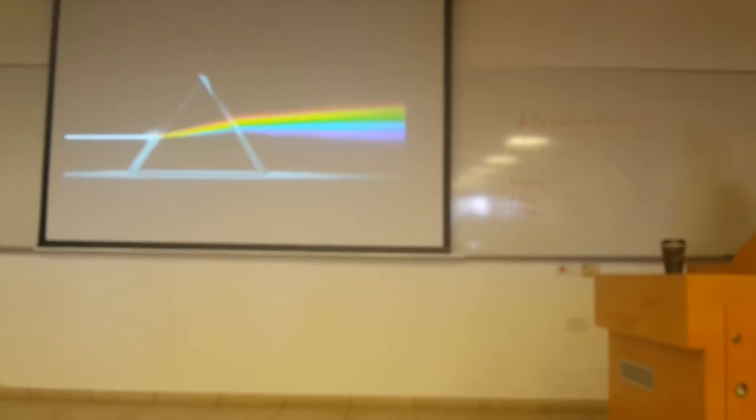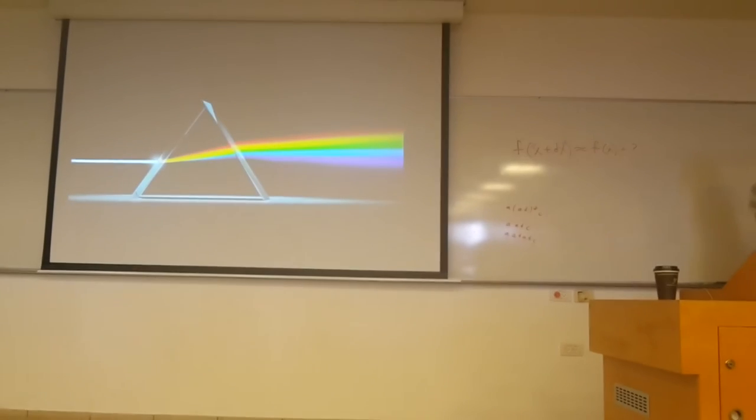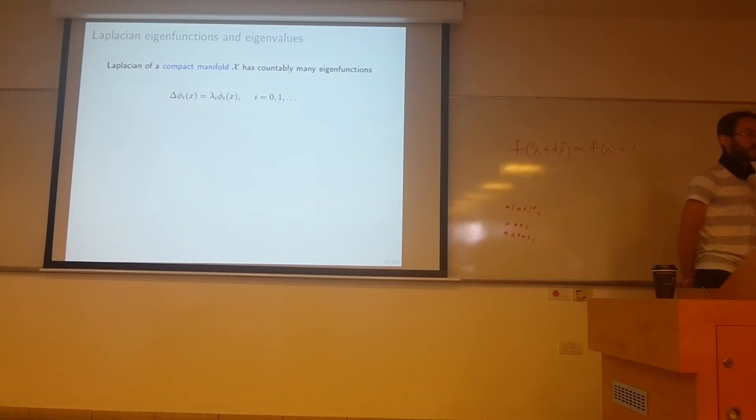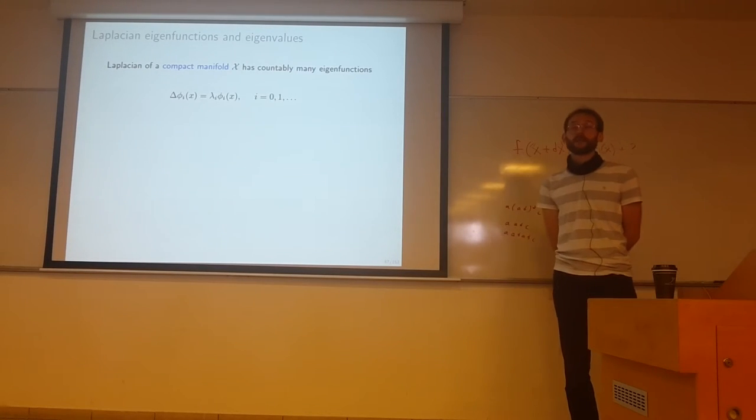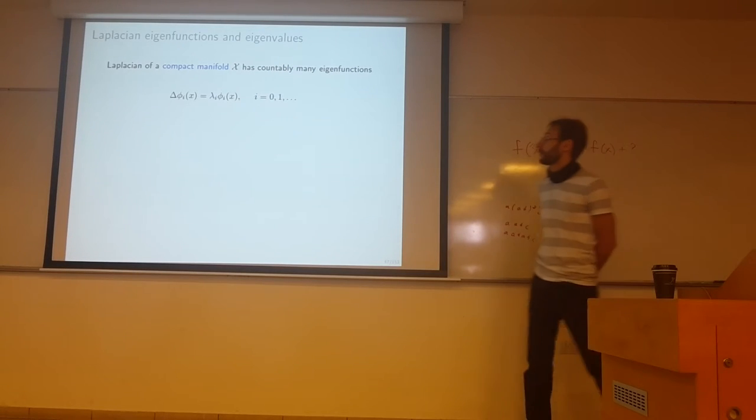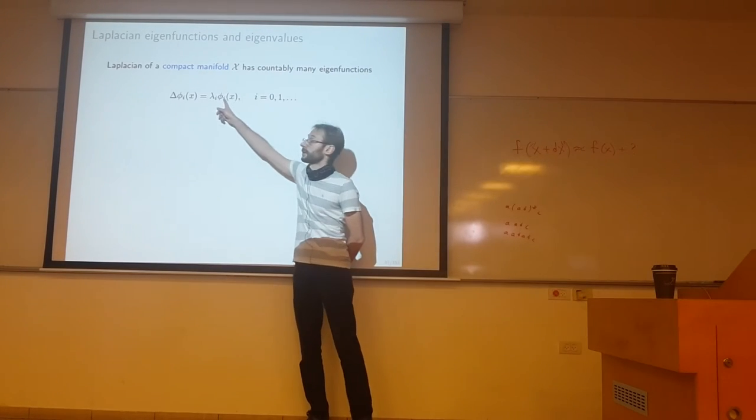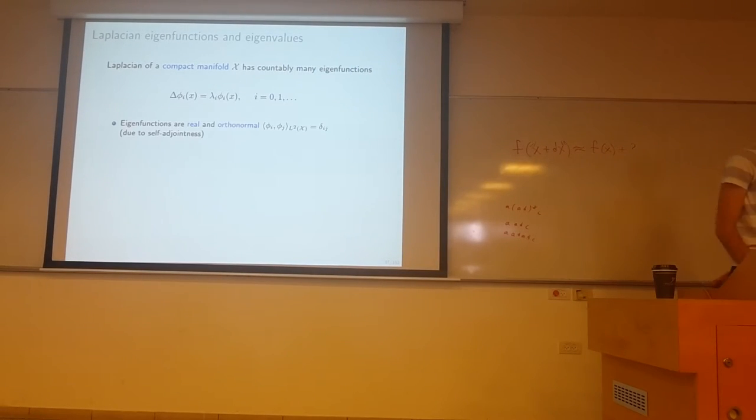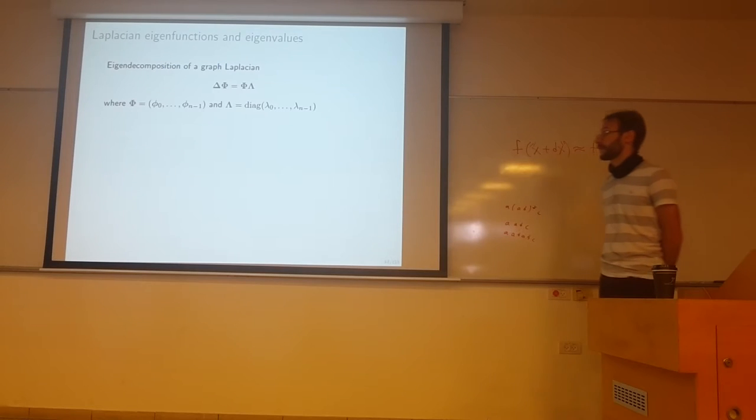Let's talk about spectral properties of manifolds and graphs. First, let's start with manifolds. If you have a Laplacian on a manifold, assuming that the manifold is compact, it has countably many eigenfunctions. There will be infinitely many, but you can enumerate them. The eigenfunctions are real and they are all orthonormal due to self-adjointness. The eigenvalues are non-negative due to positive semi-definiteness.